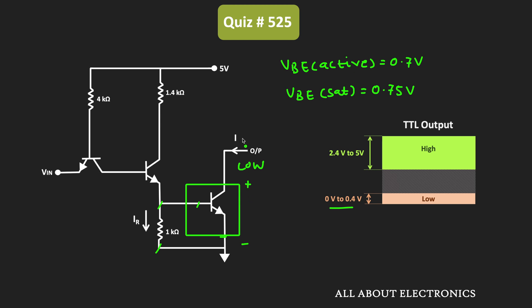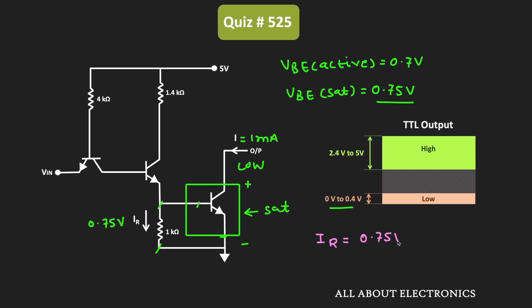Moreover, this current I is also equal to 1mA, which indicates that this transistor is indeed operating in saturation. And in saturation, we have been given that VBE is equal to 0.75V. That means the voltage across this resistor is equal to 0.75V. So we can say that this current IR is equal to 0.75V divided by 1kΩ, which is equal to 0.75mA.